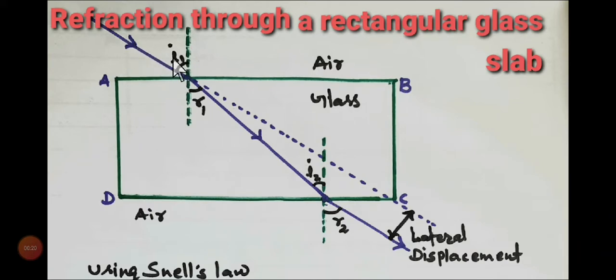i1 is the angle of incidence at this interface and it refracts through angle r1, which is the angle of refraction according to the rules of refraction. The ray is traveling from air to glass.